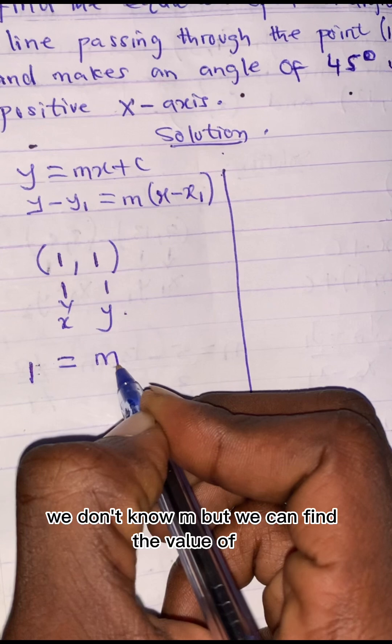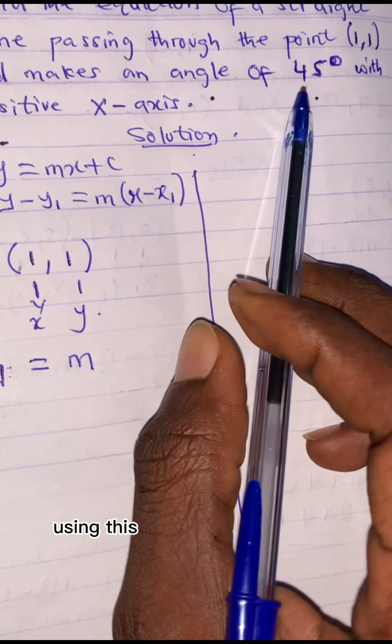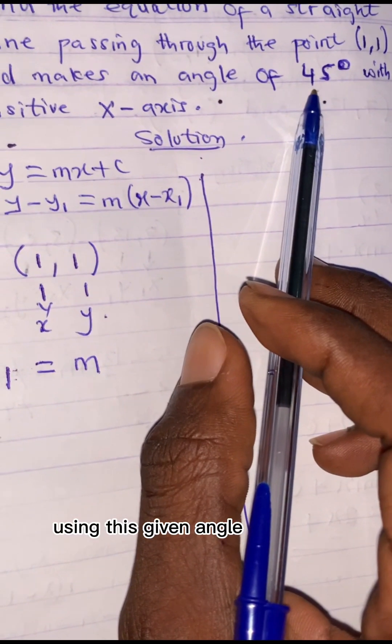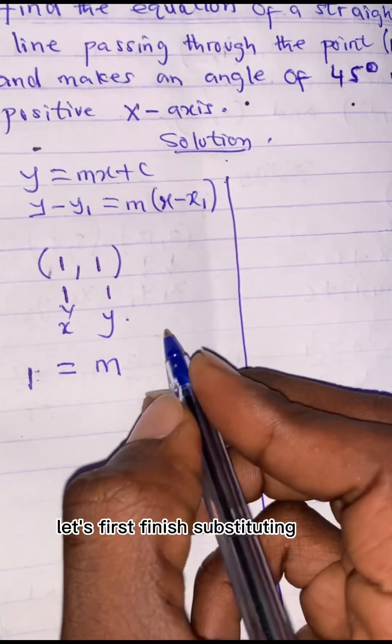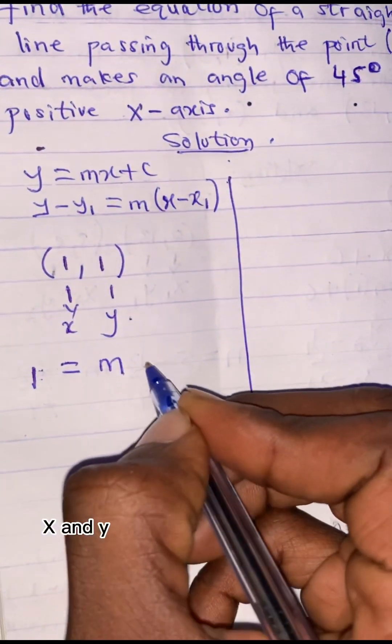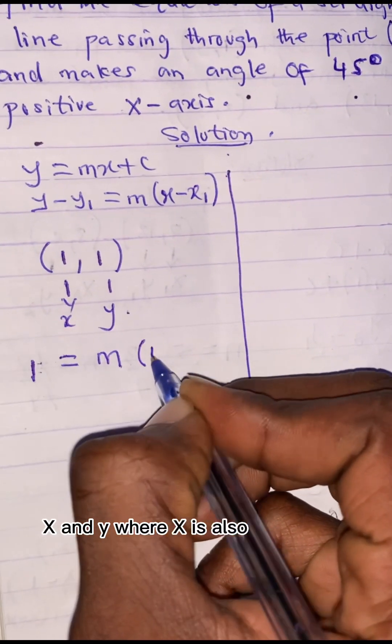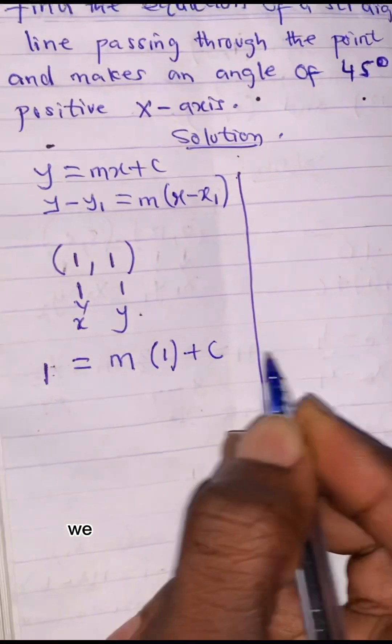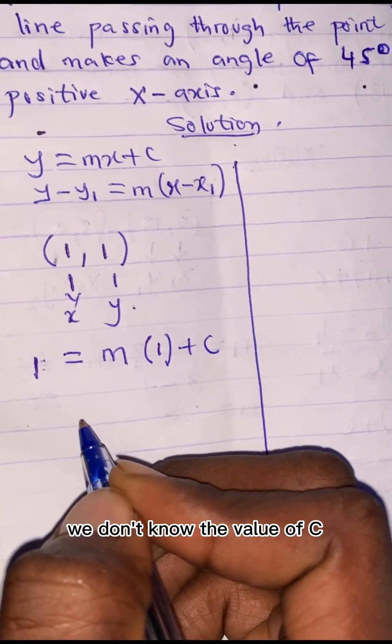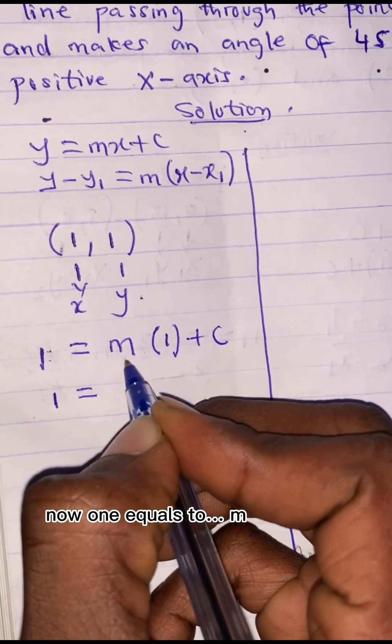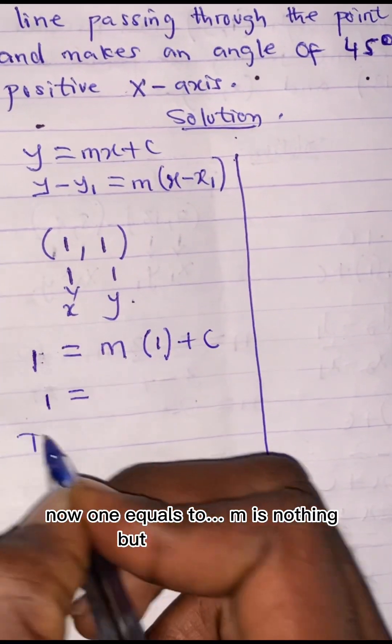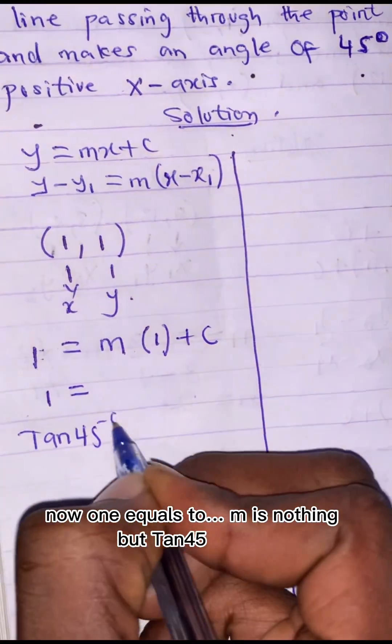but we can find the value of m using this given angle, 45 degrees. Let's first finish substituting this x and y, where x is also 1 plus c. We don't know the value of c. Now